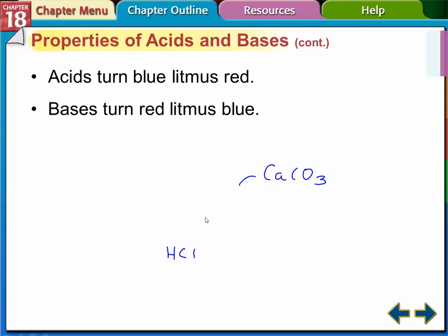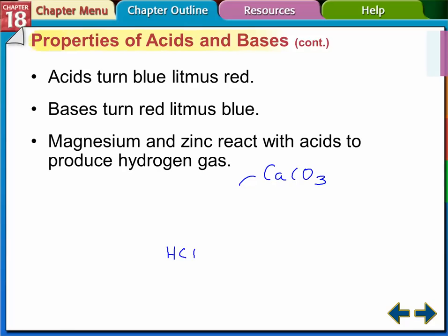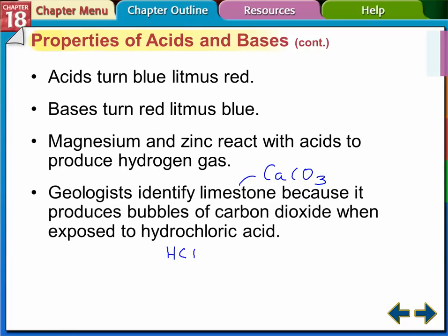Acids turn blue litmus paper red; bases turn red litmus paper blue. Magnesium and zinc react with acids to produce hydrogen gas — that's how we can tell that there's an acid. Geologists also use hydrochloric acid to see if they have limestone: calcium carbonate reacts with hydrochloric acid to produce carbon dioxide.